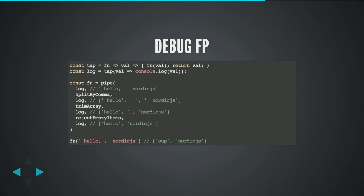You might ask how to debug that function because you can't just look inside — but you can. We need a new function called tap, which doesn't do anything other than invoke a first function on that value. The function we pass to tap will invoke console.log on the value passed. Then we return it. So if we place a log function between all the steps and pass 'hello nordic.js', in the first step we get the same string we put in. After the first step we get an array. After the second step with trim array, we get trimmed items in that array. After the last step, at the end, we get the same result as the function itself.